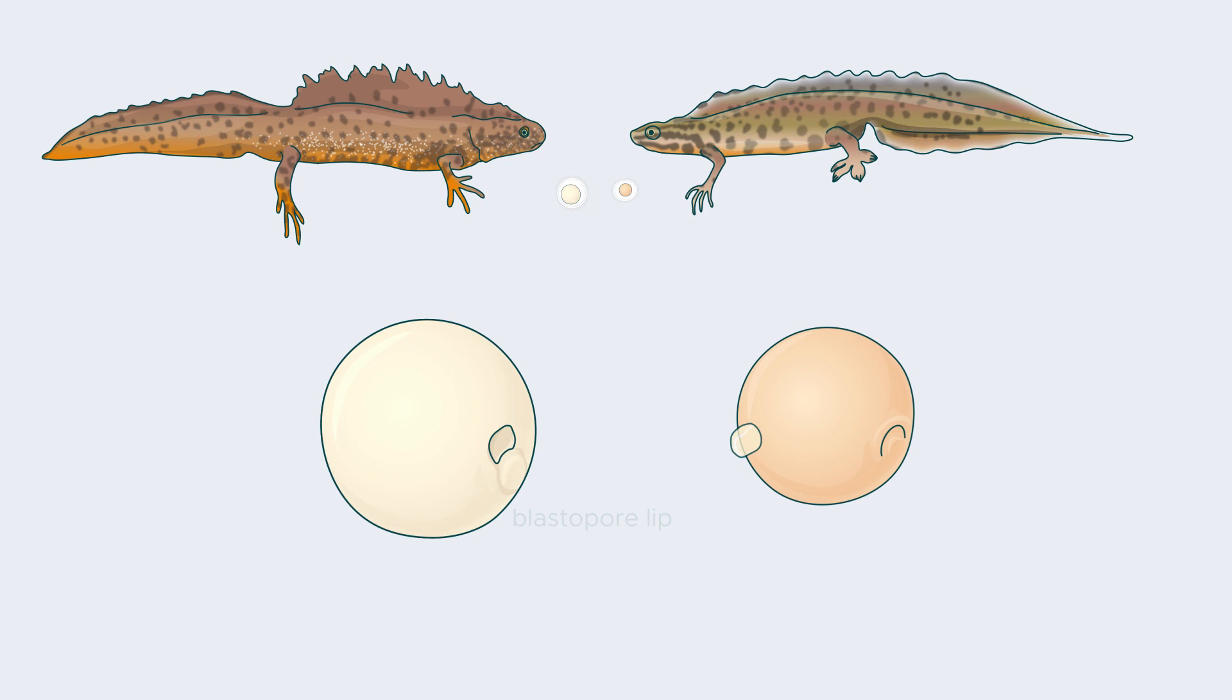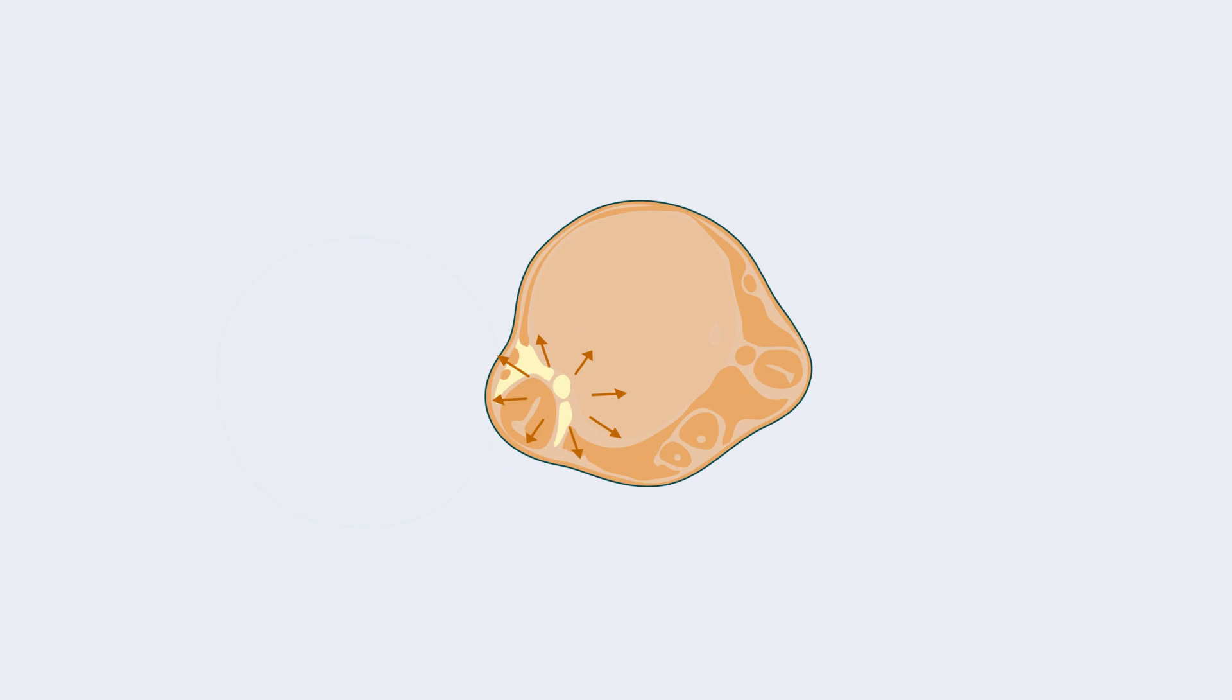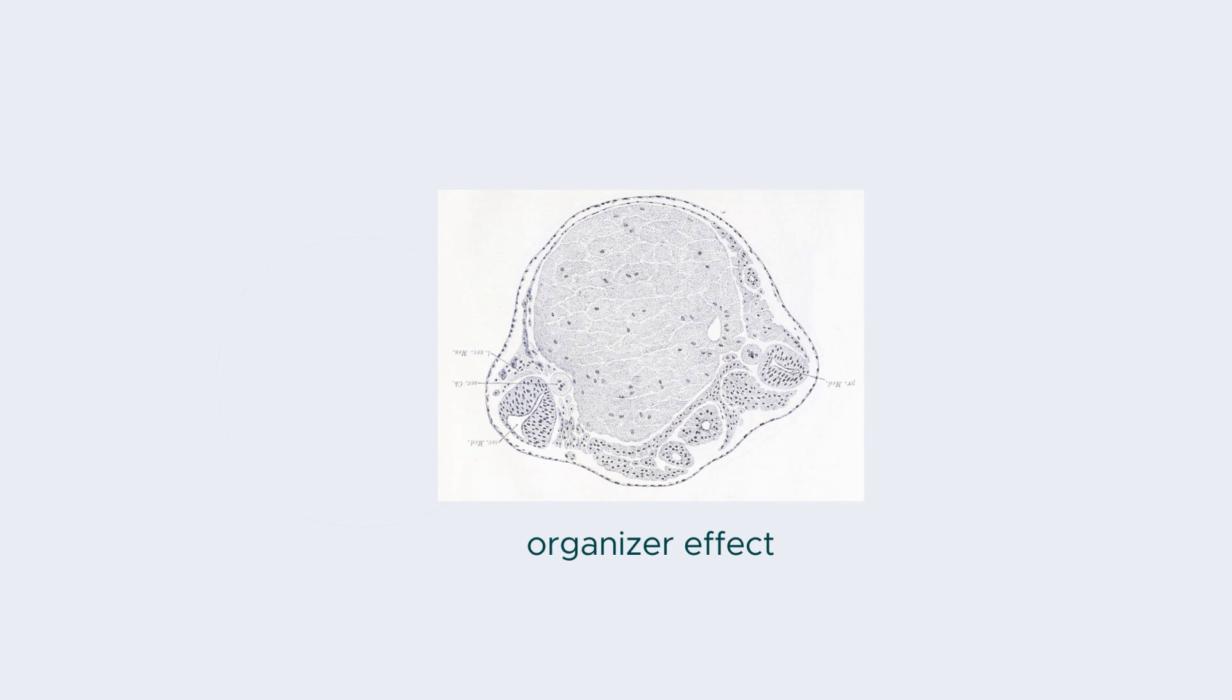Because Mangold had used two distinct newt species with different coloration, she was able to distinguish the cell's origins. The second body axis was formed by cells from both the transplant and the receiving embryo. This meant that the inserted cells had changed the original fate of the surrounding cells. Mangold and Spemann called this induction of complex anatomical structures, the organizer effect.